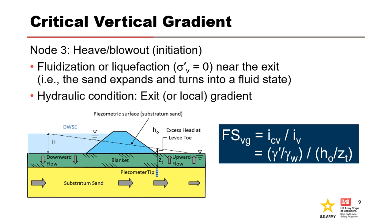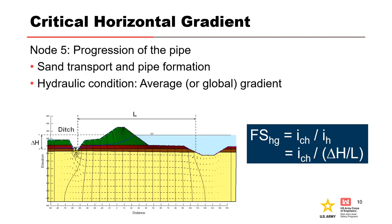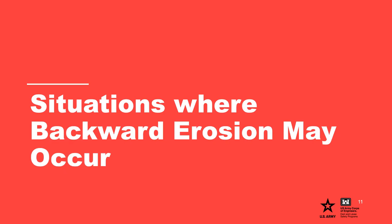Two types of hydraulic gradients are evaluated for backward erosion piping. Node 3 assesses the likelihood of heave or blowout, involving fluidization or liquefaction near the exit—the classic Terzaghi zero-effective stress condition. For this node, there is a critical gradient above which soil particles are detached, assessed using exit or local gradients. Node 5 assesses the hydraulic condition for progression of the pipe upstream or riverward, considering sand transport and pipe formation using average or global gradients.